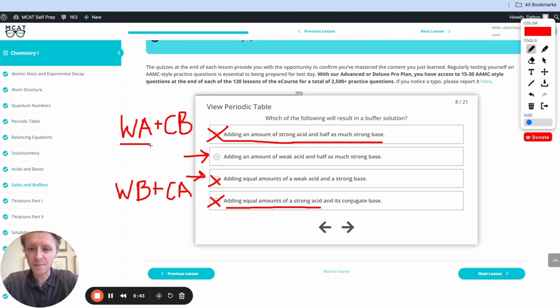On the other hand, if we add an amount of weak acid and then add half as much strong base, that strong base is going to yank protons from half of the molecules of weak acid because we're only adding half as much strong base as we have weak acid.